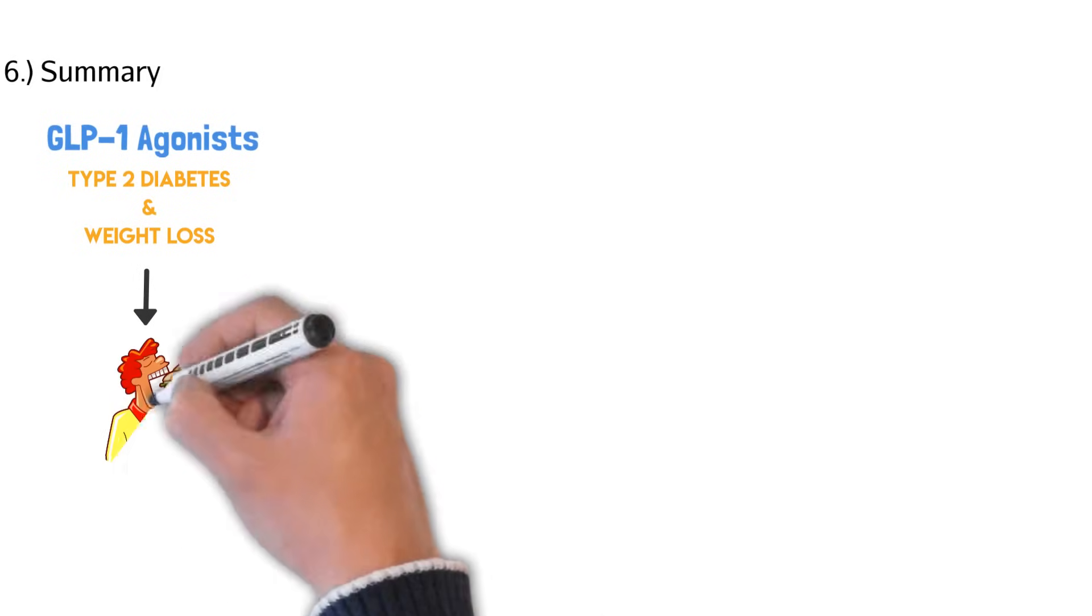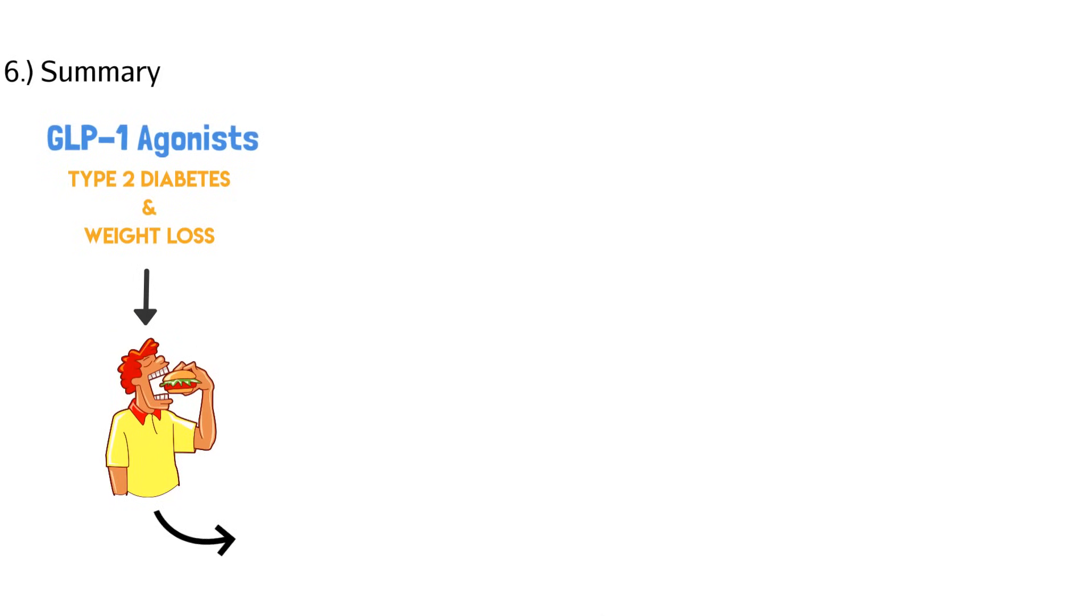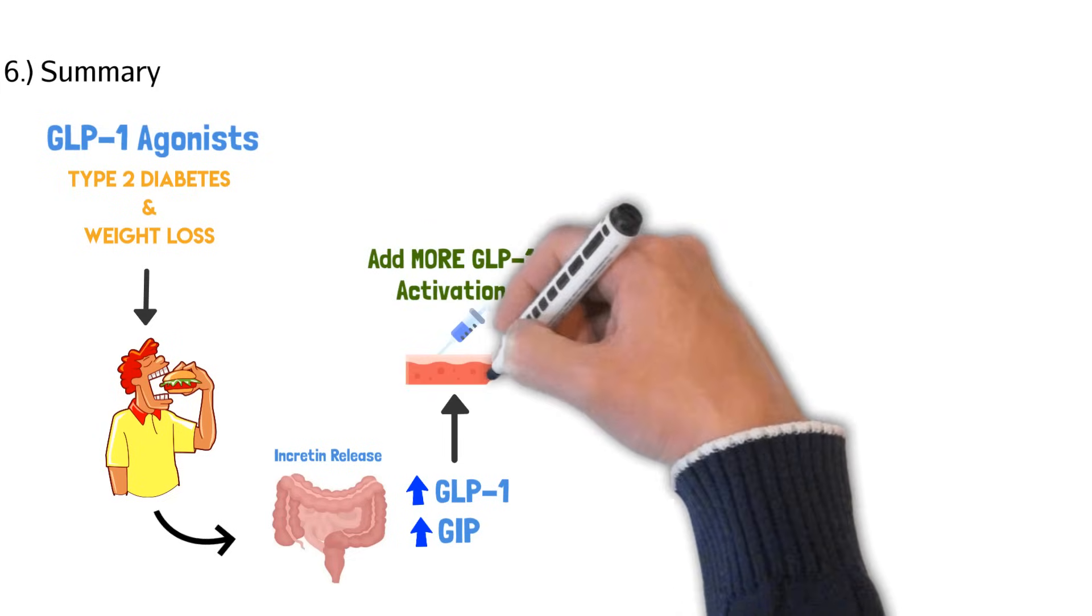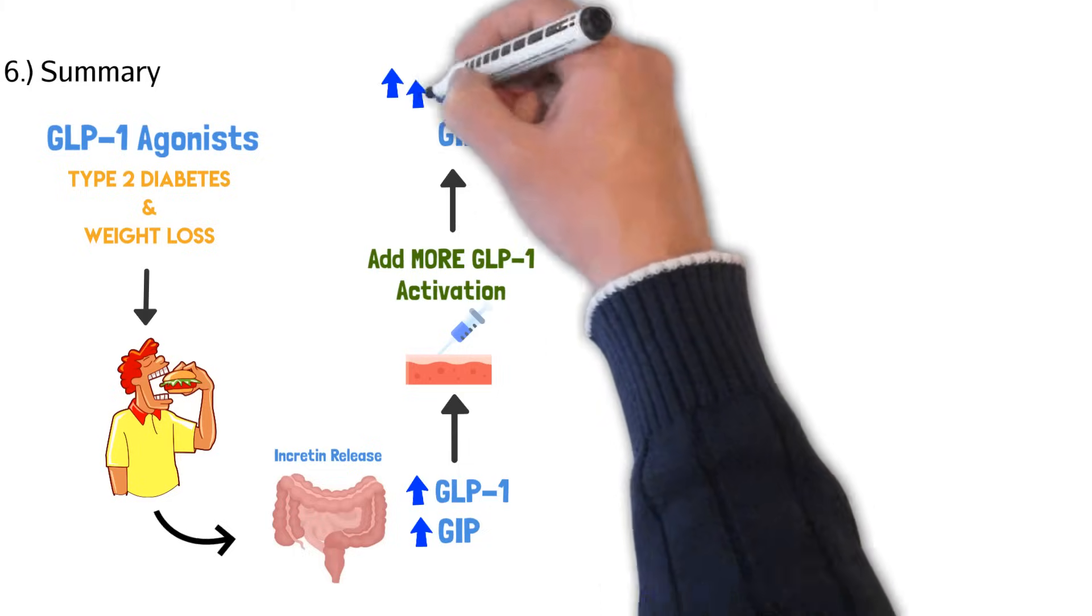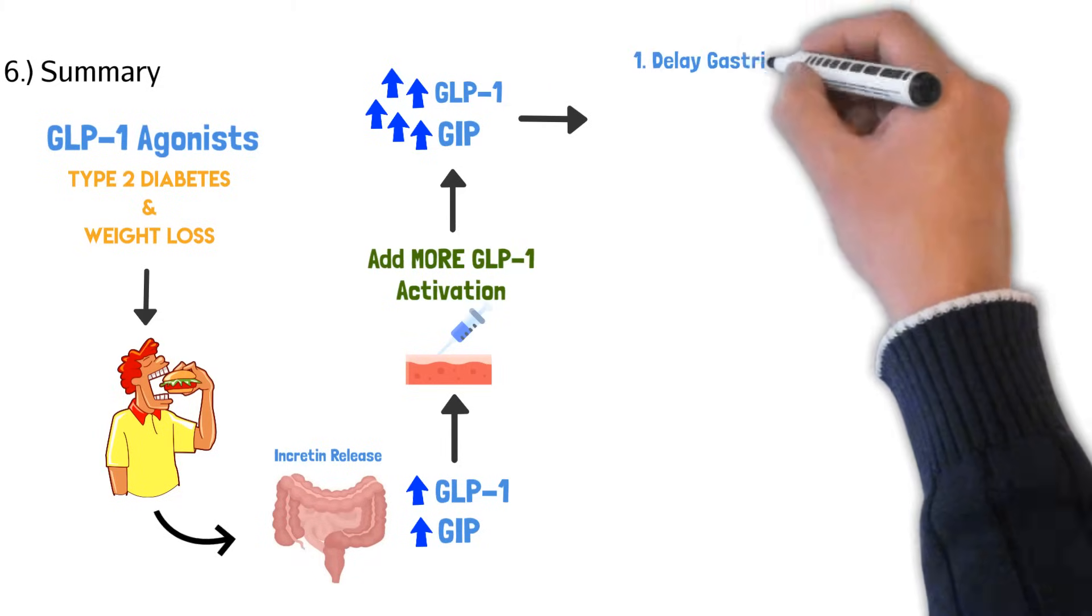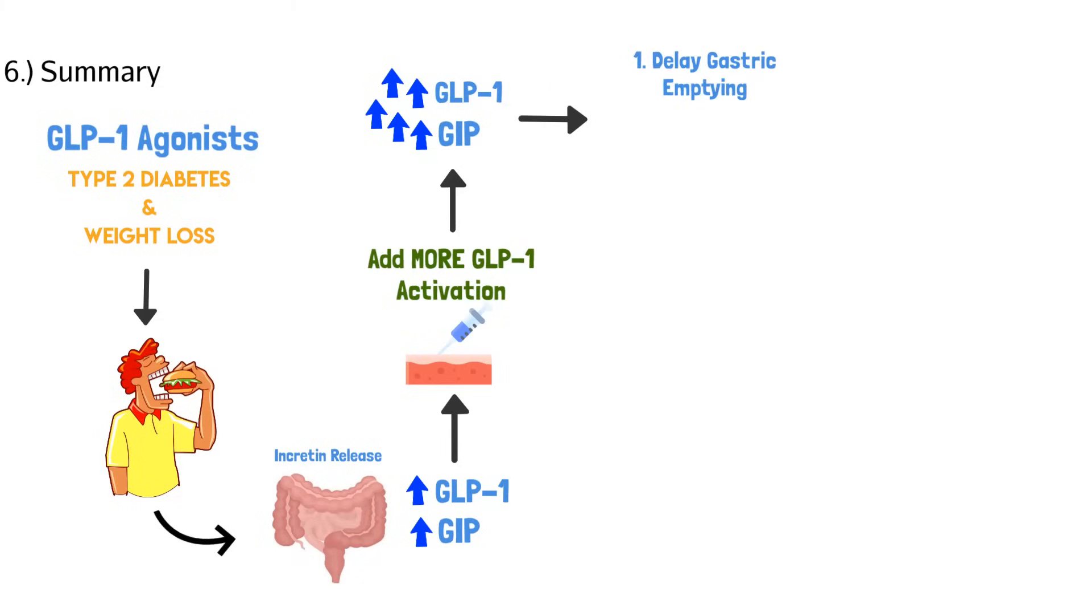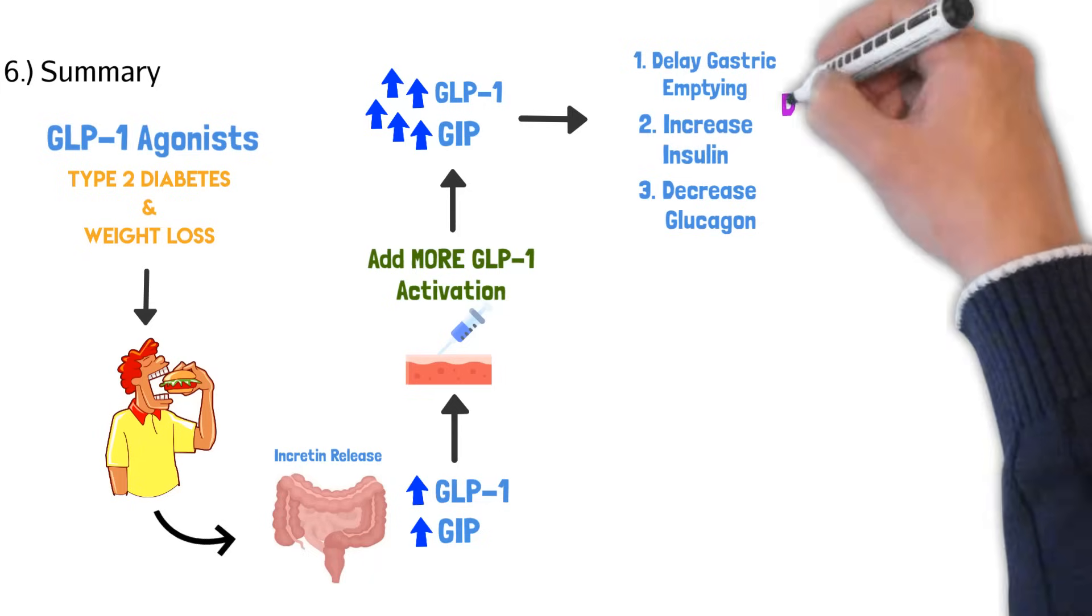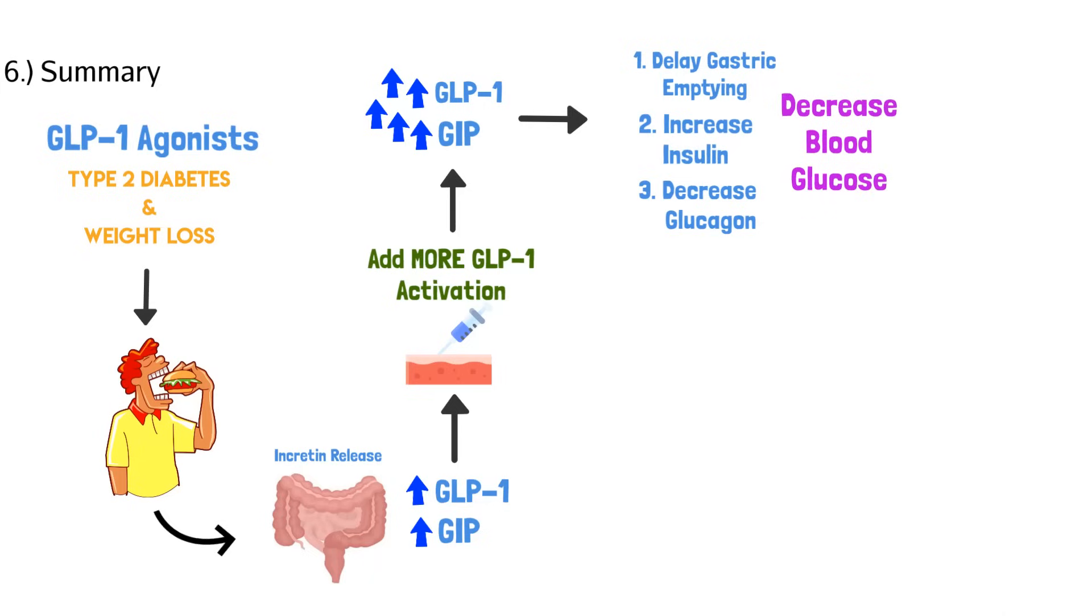All right, we made it to the end. So let's do a quick summary and then a short quiz to see what we retain. We talked about GLP-1 agonists and how they're used in type 2 diabetes or weight loss. We talked about what happens when you eat a burger. It goes to your digestive system and then you have these incretins release and the two we talked about was GLP-1 and GIP. But instead of eating, we can take a GLP-1 agonist and inject it, which increases those levels even more. So we'll have even more GLP-1, even more GIP. And what does that do? Well, three major things. It delays that gastric emptying in your stomach. It increases your insulin through your pancreas and it also decreases glucagon production. Overall, it decreases your blood glucose levels and helps with weight loss.